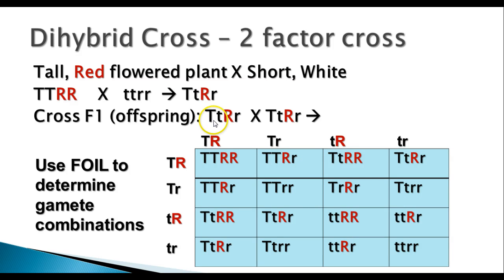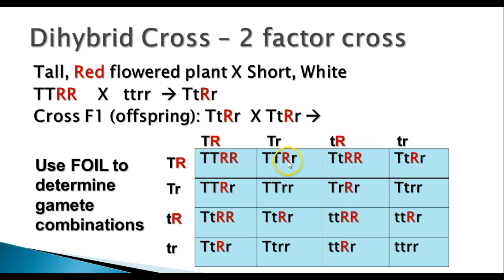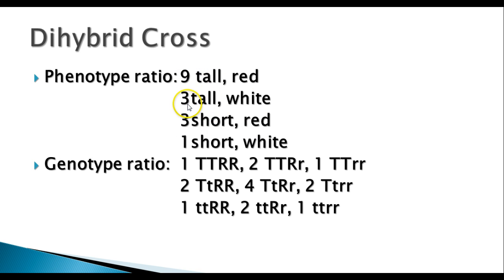When you do a true dihybrid cross — crossing parents heterozygous for two different traits — there's a specific phenotype ratio, just like in the monohybrid cross but more complicated because there are more possible outcomes. In this case the phenotype ratio is: nine that are tall and red, three that are tall and white, three that are short and red, and one that is short and white — giving you the 9:3:3:1 ratio.